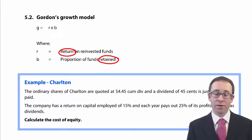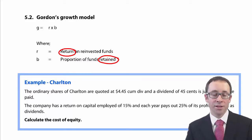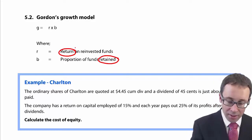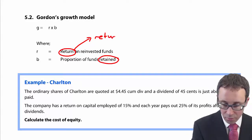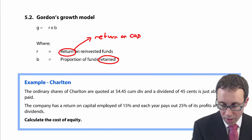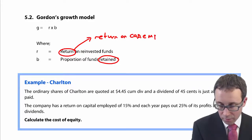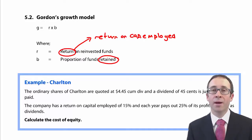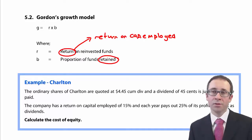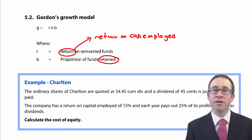You could quite simply be given the return on the funds that you've invested. Sometimes that return is referred to as your return on capital employed — you take a profit figure and divide it by your capital employed figure, which is your equity plus debt figure. But most of the time, you'll be given those within the question.